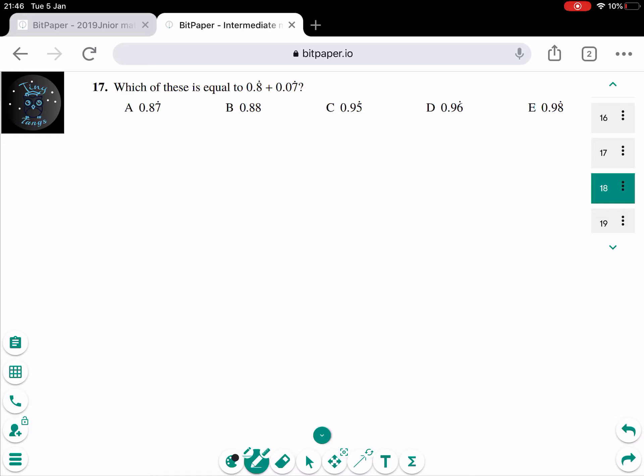For these questions, when it asks you 0.8 plus 0.07, how you calculate these numbers with the repeats is just you write 0.88888, just write as much as you need, and 0.07777.